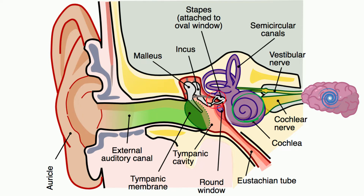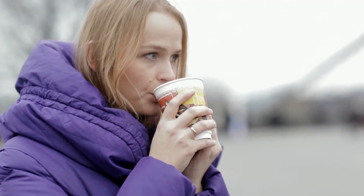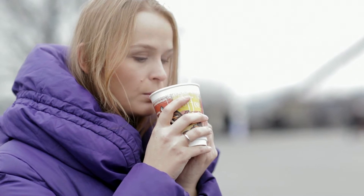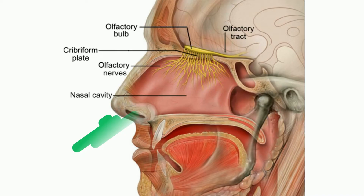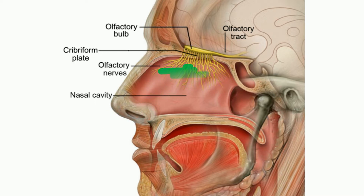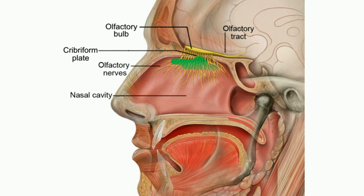Your nose is designed to capture smells. When you breathe, molecules from the air enter your nostrils and make their way to the back of your nose to a patch of skin called the olfactory bulb. It has layers of receptors called olfactory nerves that sense smells and then send signals through the olfactory tract to your brain.